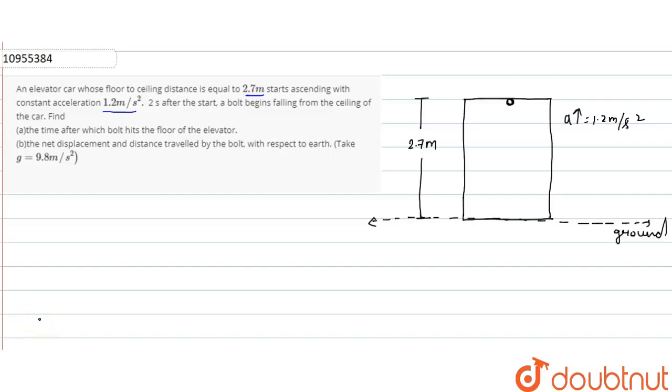Hello everyone, I am showing you a question on the screen. An elevator car whose floor to ceiling distance is equal to 2.7m starts ascending with constant acceleration 1.2m per second square. After 2 seconds of start, a bolt begins falling from the ceiling of the car. Find the time after which bolt hits the floor of the car.